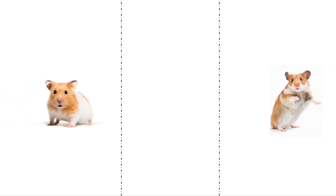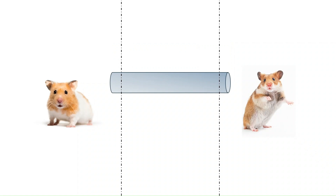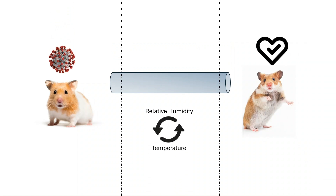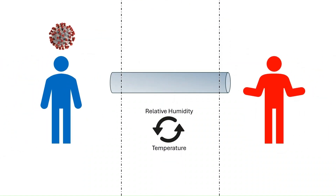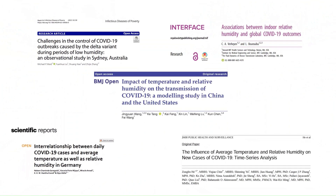In animal studies, researchers place test animals into cages — for SARS-CoV-2, hamsters and ferrets have been used — separated so that environmental factors like temperature and humidity can be controlled. They then infect one animal and observe how altering these factors affects transmission rates. What has been reported is that humidity had either minimal or no effect on transmission. This is important because in animal studies, almost all of the factors that affect transmission are controlled as best as possible.